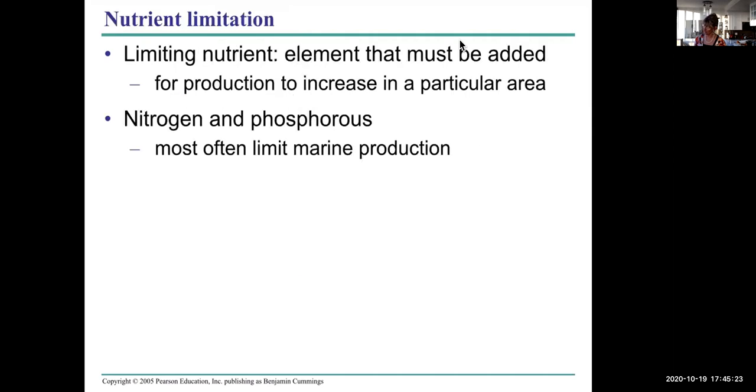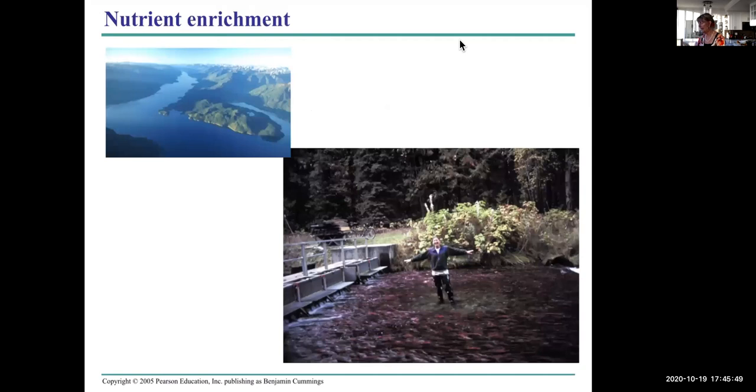Also, limiting nutrients. A limiting nutrient is an element that must be added for production to increase in a particular area. Nitrogen and phosphorus are two elements that can limit marine production. I'd like to highlight a study done while I was doing my grad work by my friend Lisa. This is Kootenay Lake, east of Nelson in the interior.